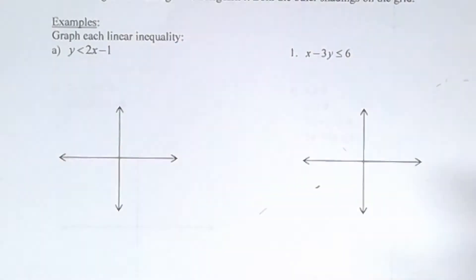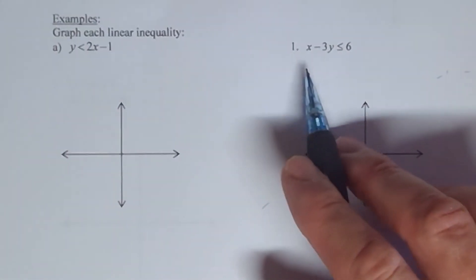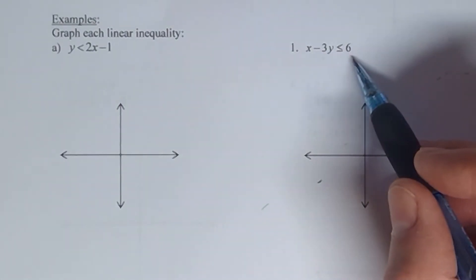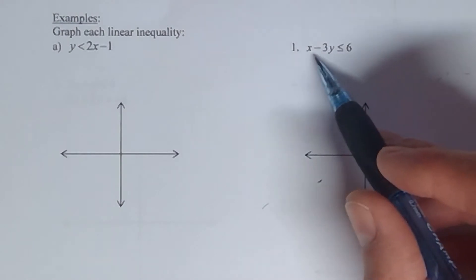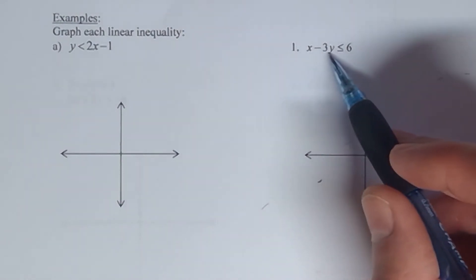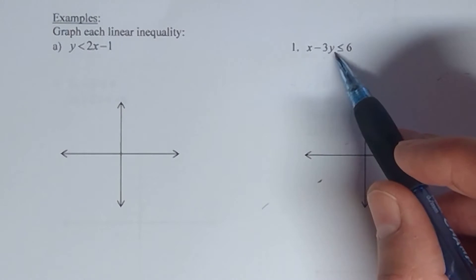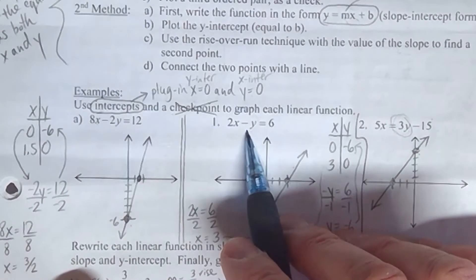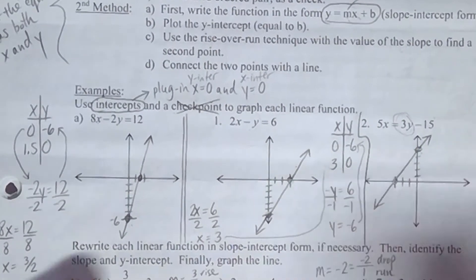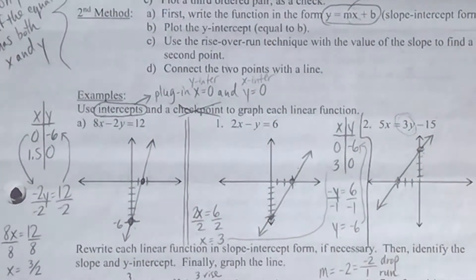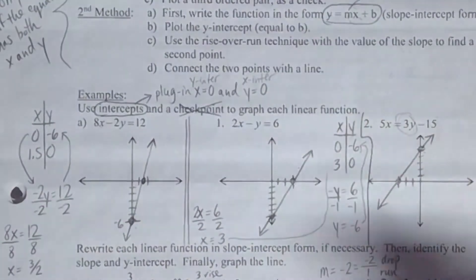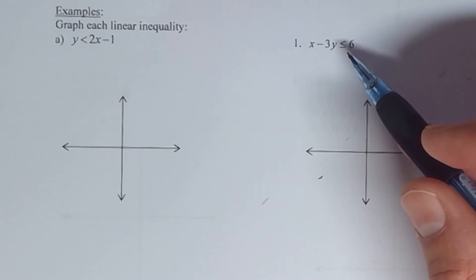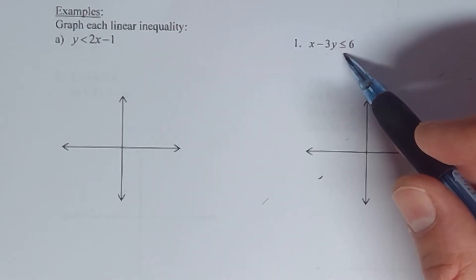Sometimes the problems will look like this where it's not in the y equals mx plus b form, but both sides are polynomials and you don't have any visible exponents attached to the variables — just x to the first and y to the first. When that happens, similar to problems in 2.4, those are called linear equations, and therefore when we graph them, they're lines. The only difference with this problem compared to 2.4 is that it's not an equal sign — it's an inequality.